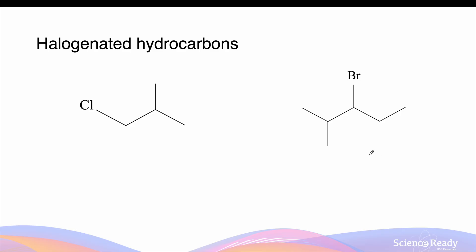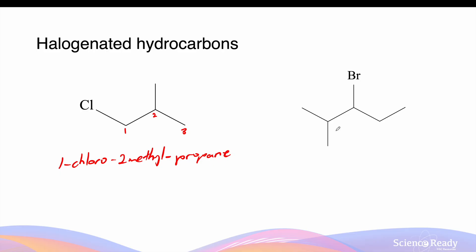Looking at our halogenated hydrocarbons, remember that we are going to prioritize the naming of the halogens. This is going to be a propane because it has 1, 2, 3 carbons in its longest chain, with the chloro on carbon number 1 and the methyl on carbon number 2. This will be 1-chloro-2-methyl-propane. On our next structure, we have 5 carbons. We give numbers to each of the carbon sites in order to minimize the locant numbers. To minimize the numbers, the bromine should be at number 3 and the methyl at carbon number 2. Since the halogen comes first, this will be 3-bromo-2-methyl-pentane.